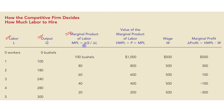Marginal product of labor is change in output upon change in labor. In this video we will focus on the fourth column, which is value of the marginal product of labor. Value of the marginal product of labor is equal to price of the output times the marginal product of labor. When we are talking about value, it means in monetary terms.